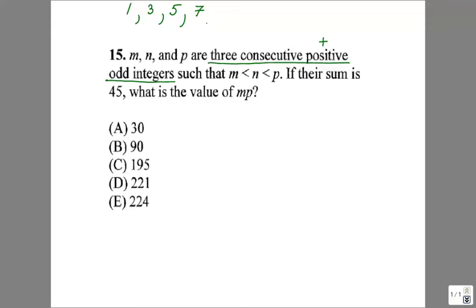We need consecutive odd integers, and they're already given here to you. What do you guys notice in here? To move from one to three, I'm adding two. From three to five, I'm adding two. From five to seven, I'm adding two.